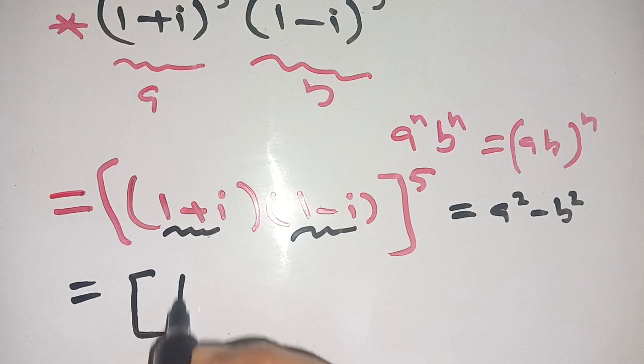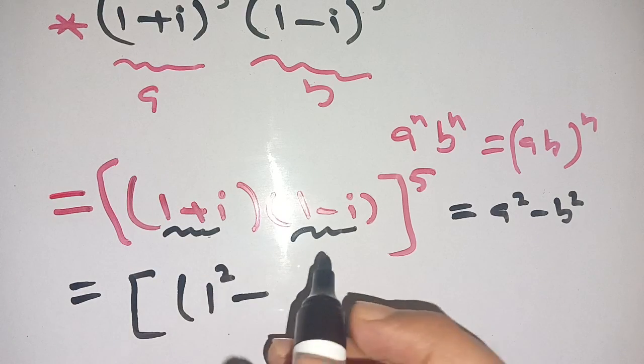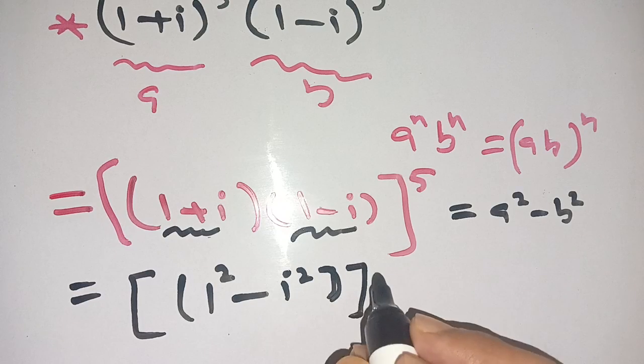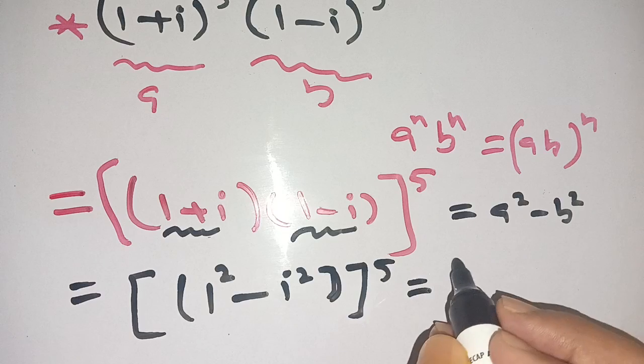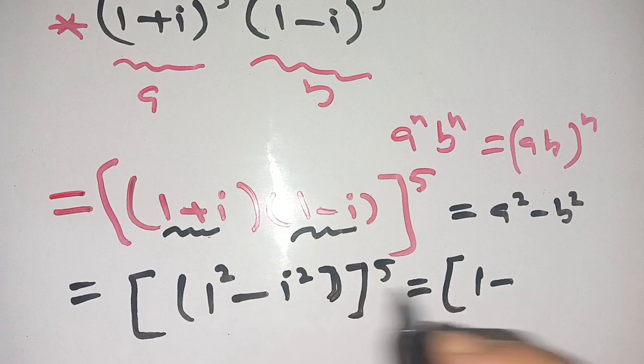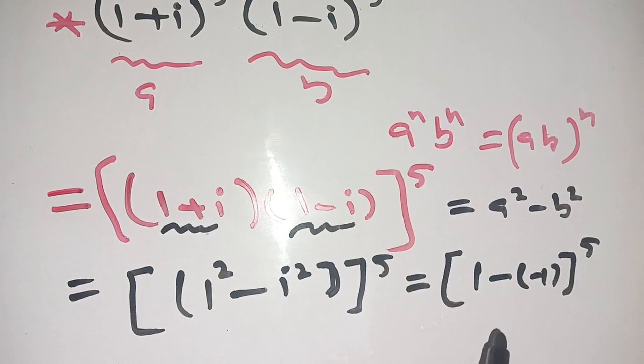It is equal to [1 - i^2]^5, which equals [1 - (-1)]^5 since i^2 = -1.